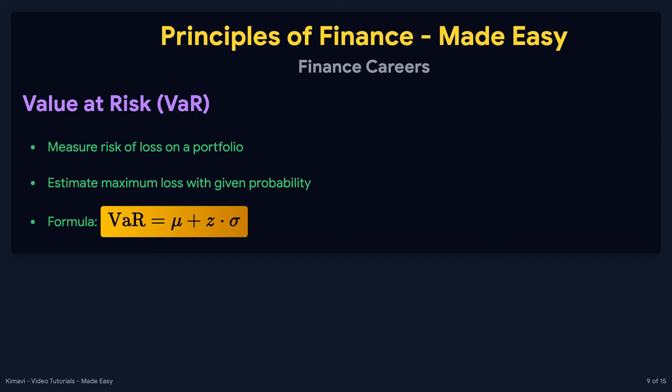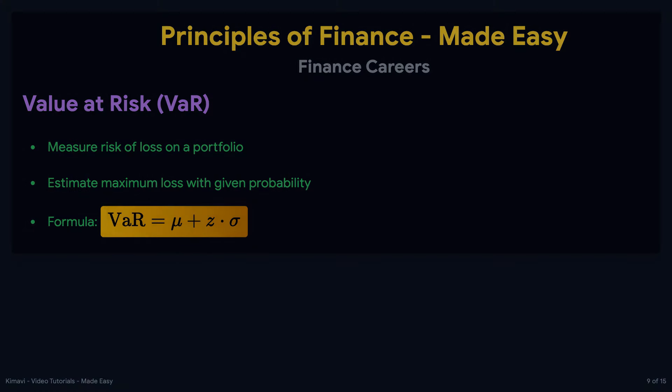Here, mu represents the expected return, Z is the Z score, and sigma is the standard deviation of returns.